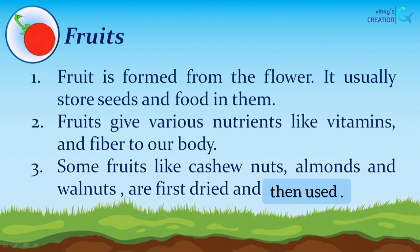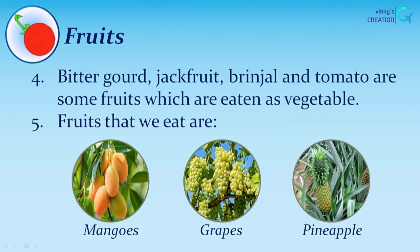Fruits. Fruit is formed from the flower. It usually stores seeds and food. Fruits give various nutrients like vitamins and fiber to our body. Some fruits like cashew nuts, almonds, and walnuts are first dried and then used. Bitter gourd, jackfruit, and tomato are some fruits which are eaten as vegetables. Some examples of fruits we eat are mangoes, grapes, and pineapple.